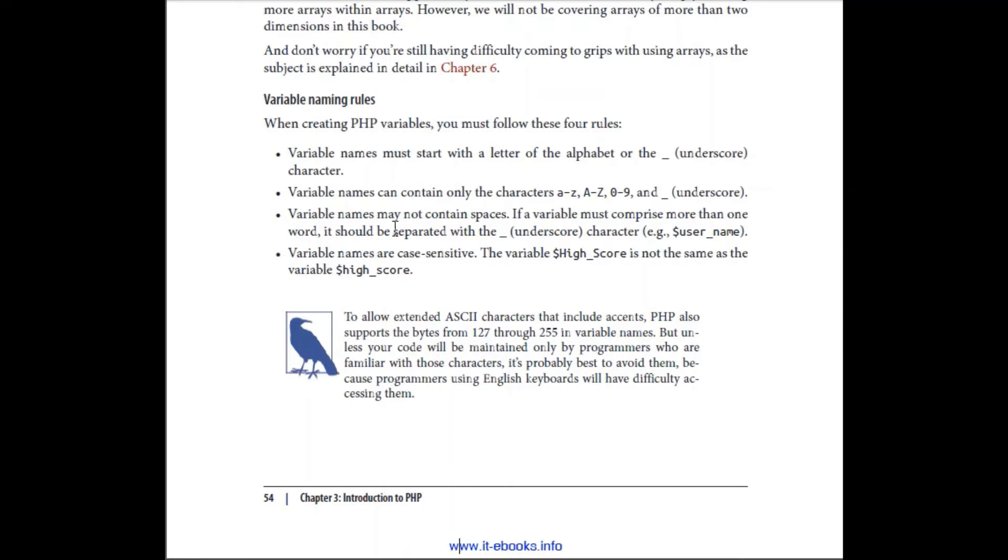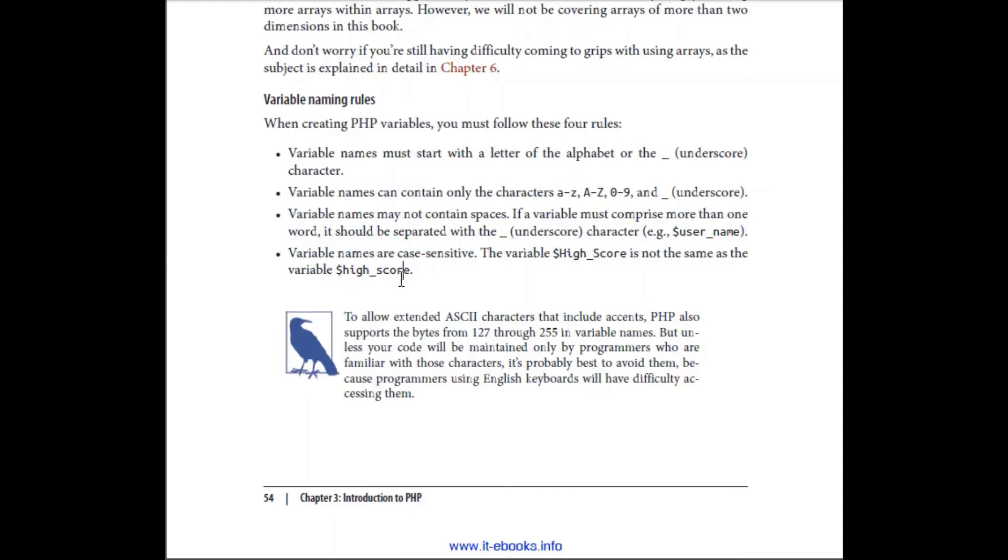Capital A to Z, zero to nine, underscores. No space should be given in a variable name and this is case sensitive. So if you write ABC in small and ABC in capital, both are not the same, they are different.